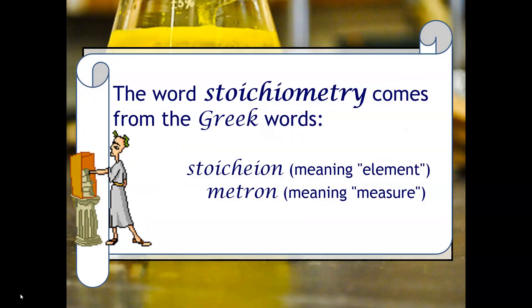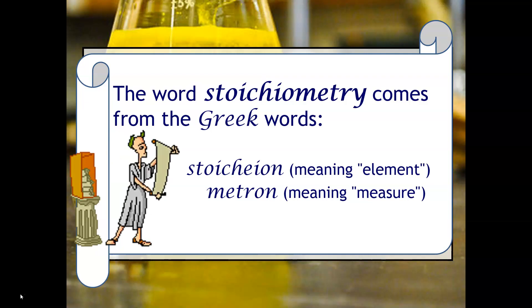A lot of students often ask, Ms. Raz, what does stoichiometry mean? Like where does it come from? So the meaning is stoichion, element, and metron, meaning to measure.